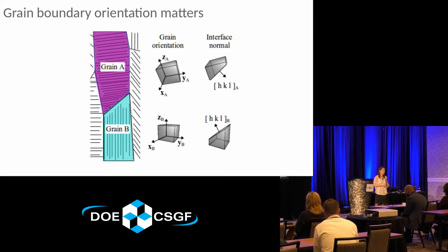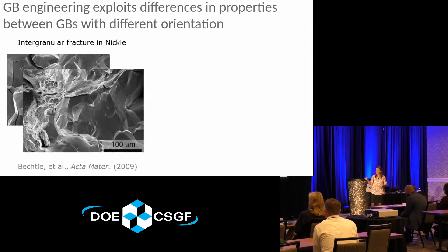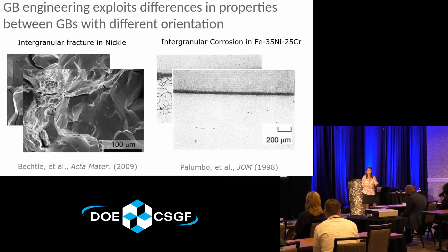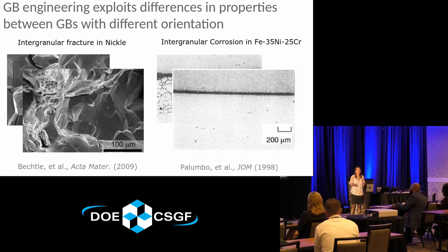About 30 years ago, researchers actually started figuring out how to do this. They were able to increase the fraction of grain boundaries in materials that were resistant to things like cracking, so that a material that originally suffered from intergranular failure — after grain boundary engineering — then exhibited much higher strength and actually failed plastically. Similarly, with intergranular corrosion, by shifting the fractions of different kinds of grain boundaries in the structure, they were able to generate a material that was essentially immune to corrosion failure.